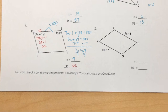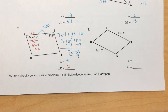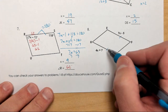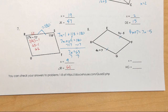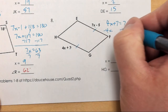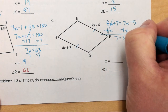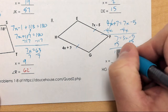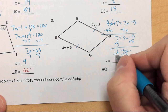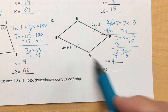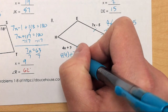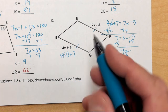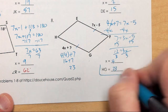Number eight is focusing on sides. Opposite sides on parallelograms must equal each other, so 4x plus 7 equals 7x minus 5. Subtracting 4x from both sides gives 7 equals 3x minus 5. Adding 5 to both sides gives 12 equals 3x, and dividing by 3 gives x equals 4. Plugging back in to find HG: 4 times 4 plus 7 is 16 plus 7, which equals 23.